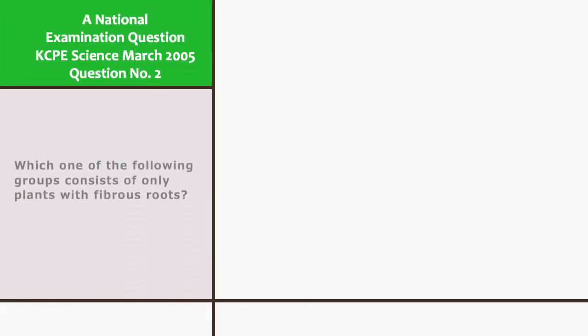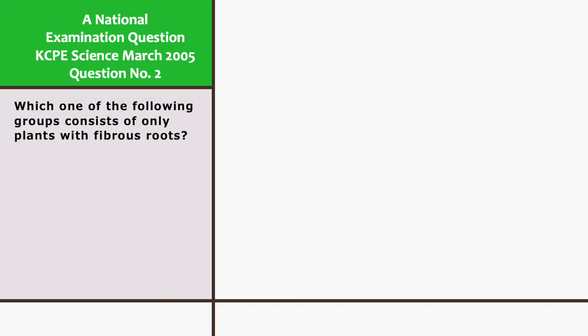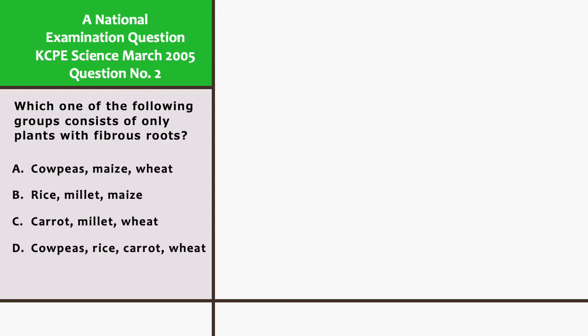Which one of the following groups consists of only plants with fibrous roots? A. Cowpeas, maize, and wheat. B. Rice, millet, and maize. C. Carrot, millet, and wheat. And D. Cowpeas, rice, carrot, and wheat.